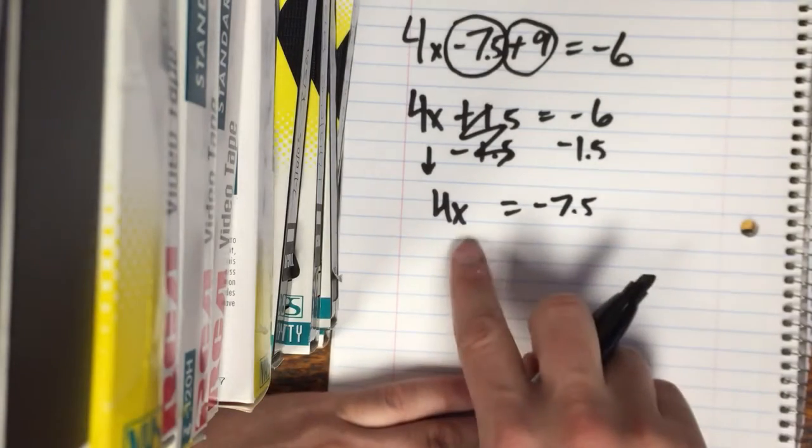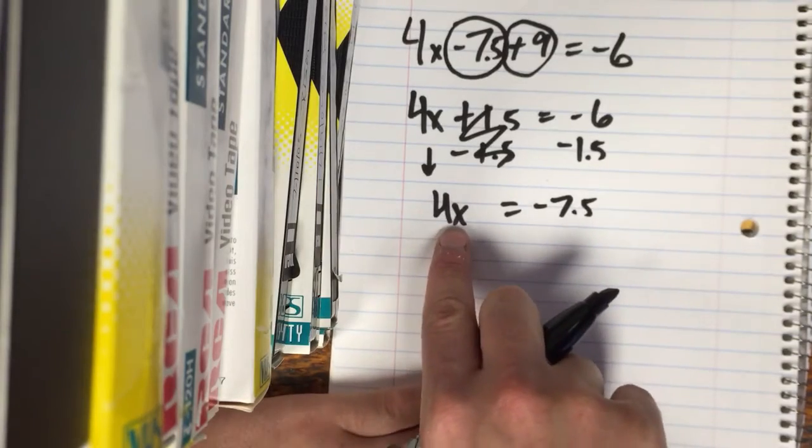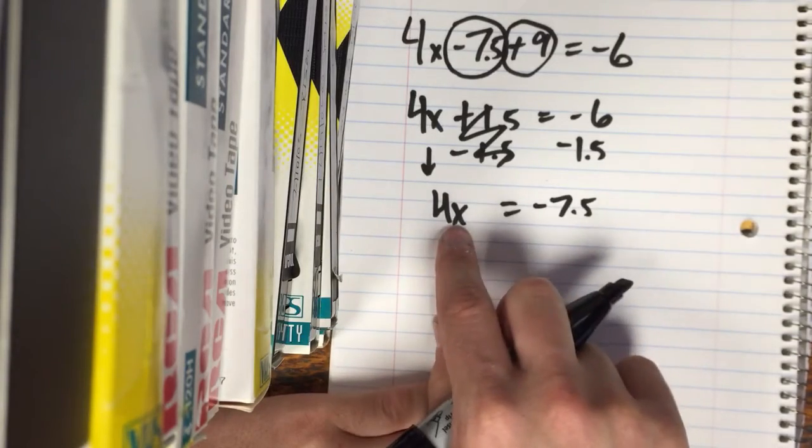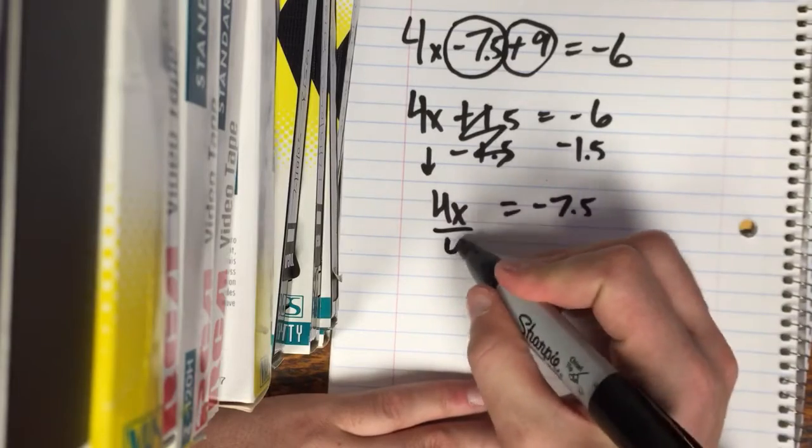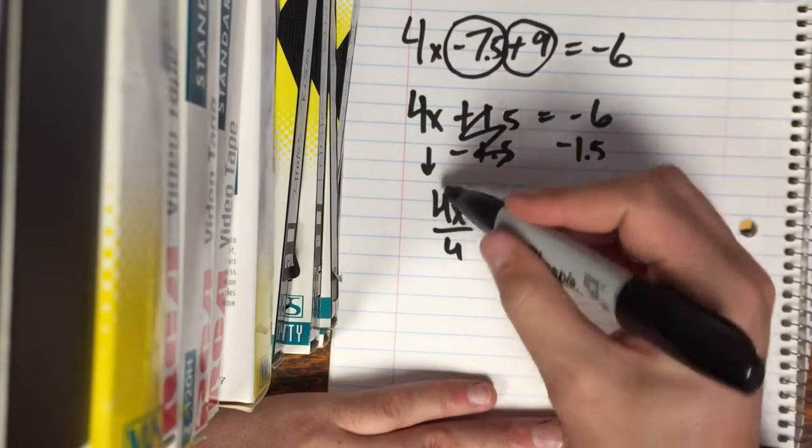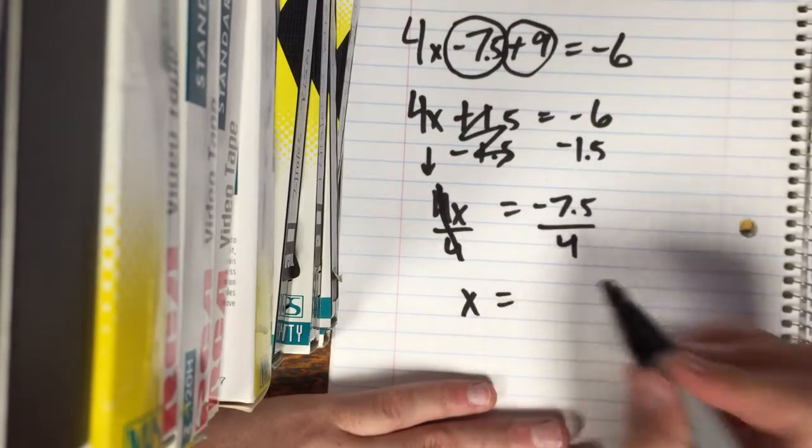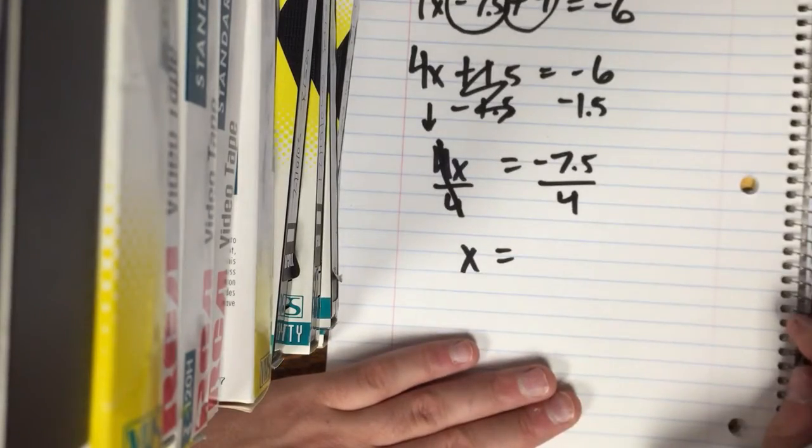Okay now we are going to get rid of that 4. So how do you get rid of 4? It's 4 times X so we got to divide. That goes away. X is there. And then negative 7.5 divided by 4.